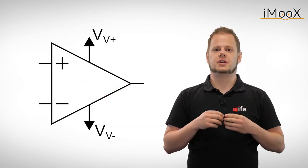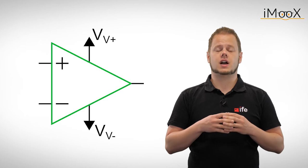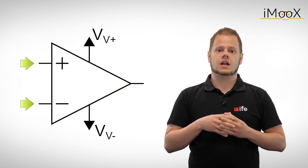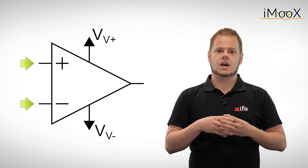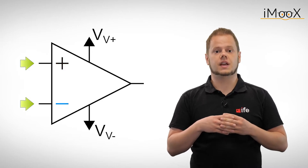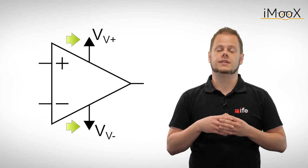The symbol of an operational amplifier is a triangle signifying that two input signals are combined to one output signal. On the left hand side there are the two input terminals. The one marked with a plus is the non-inverting input, while the one marked with a minus is the inverting input. The two power supply terminals are often omitted in schematics.